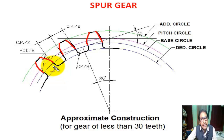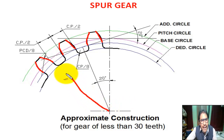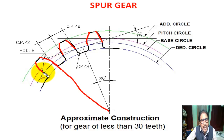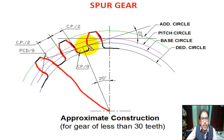Now we join radially — meaning along the radius — from the base circle to the addendum circle for each arc point. We join each portion radially, connecting base circle to addendum circle along the tooth profile.